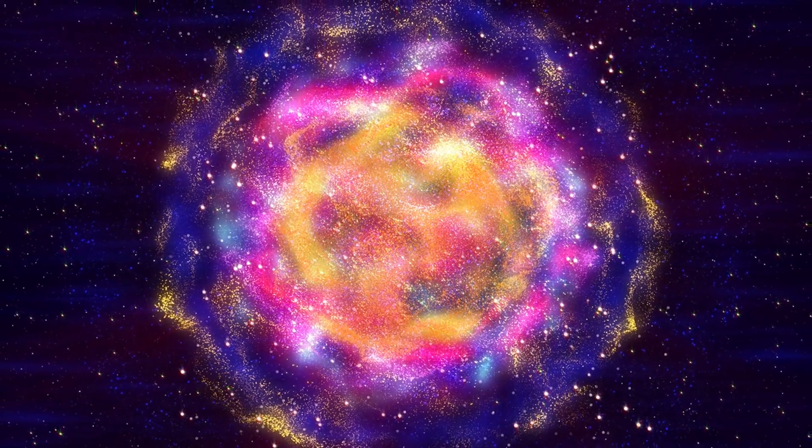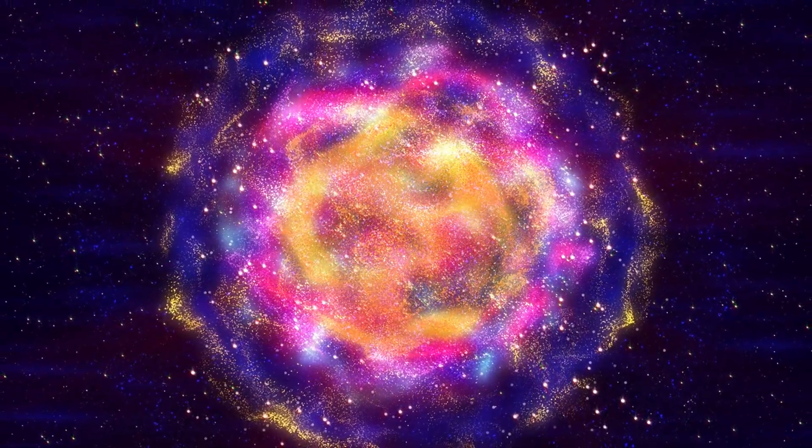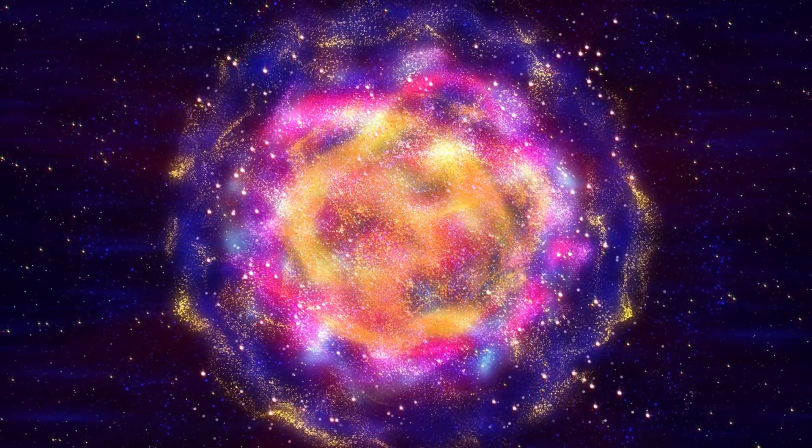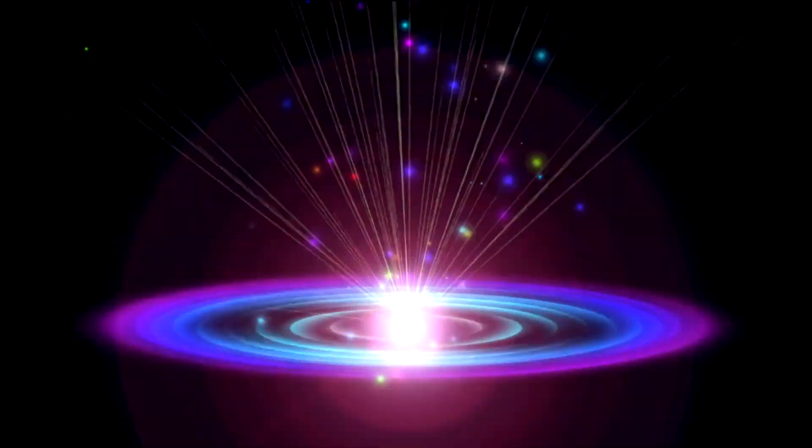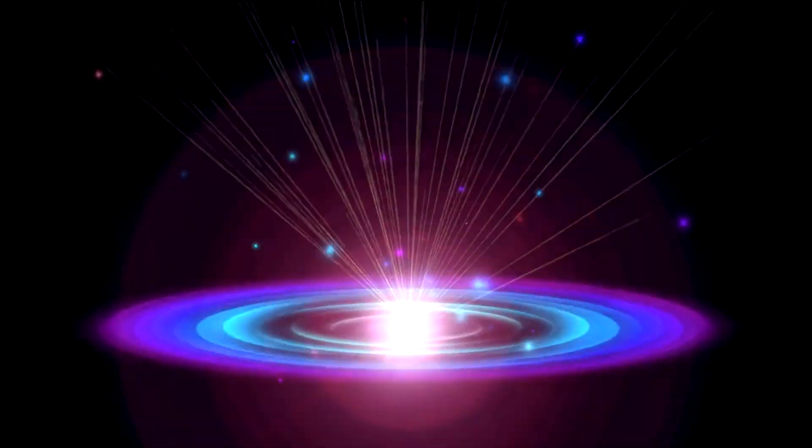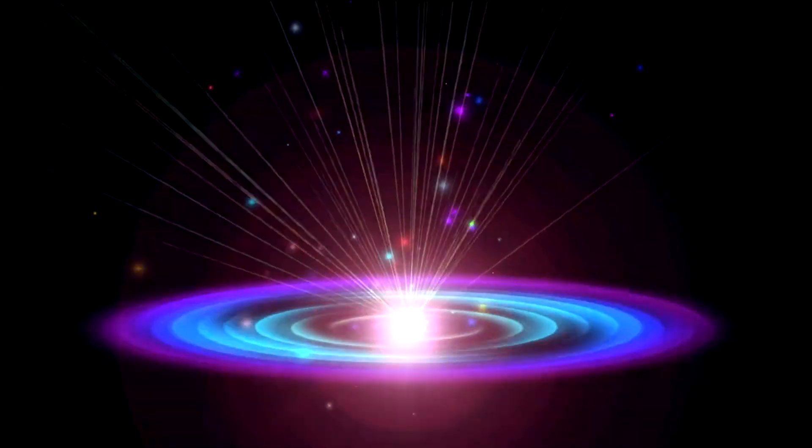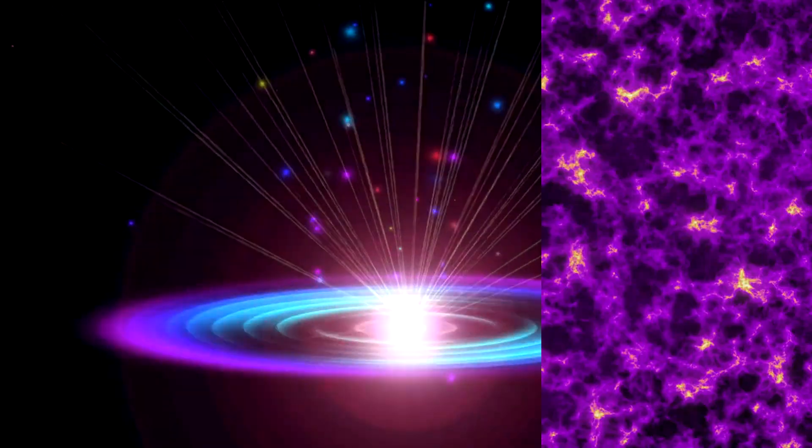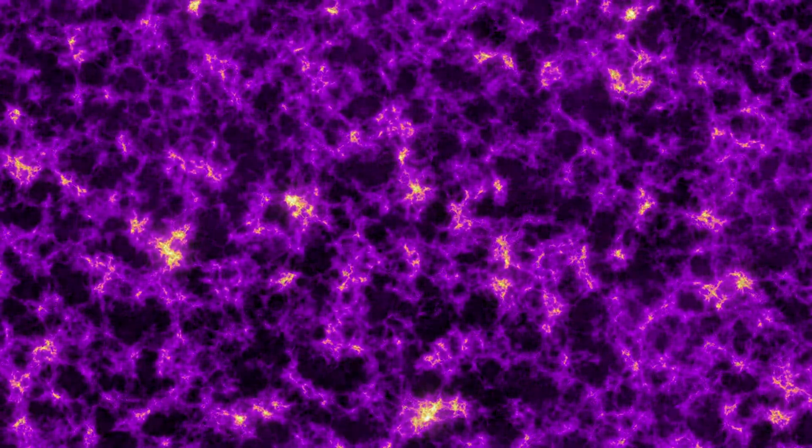For example, the Boots void is a colossal expanse with very few galaxies, spanning hundreds of millions of light-years in diameter. Such voids are so vast that they make up about 80% of the observable universe. This means that the majority of the universe is actually composed of these enormous empty spaces, with the matter being concentrated in the dense filaments and clusters. The cosmic web structure has profound implications for our understanding of the universe. It reveals how matter is distributed on the largest scales and offers insights into the processes that have shaped the universe since its inception.